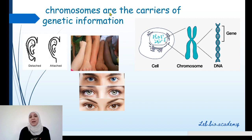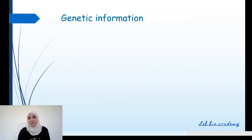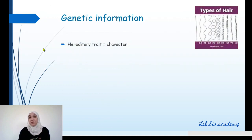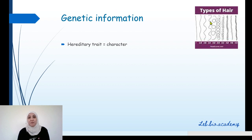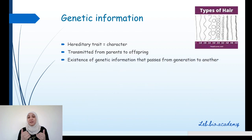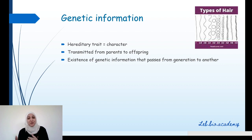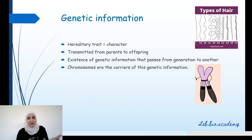That's why we say that chromosomes are the carriers of genetic information. Genetic information is a hereditary trait or character — for example, the type of hair. This character or genetic information is transmitted from parents to offspring. Offspring means the descendants, the kids. This genetic information can pass from one generation to another.